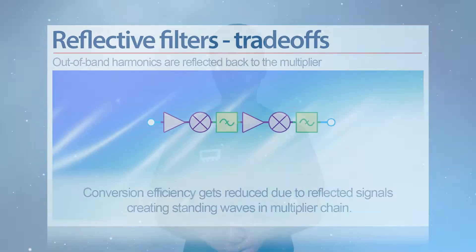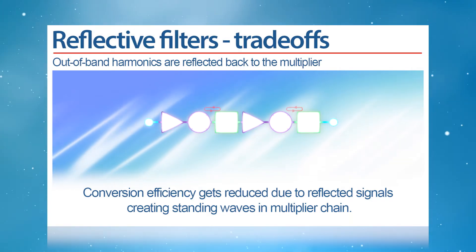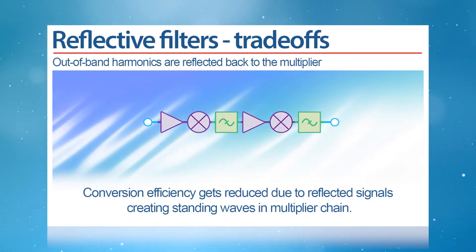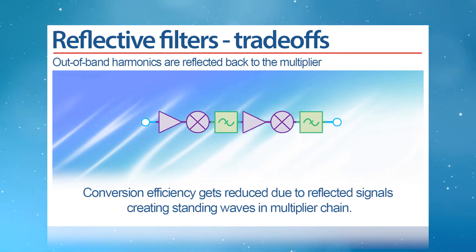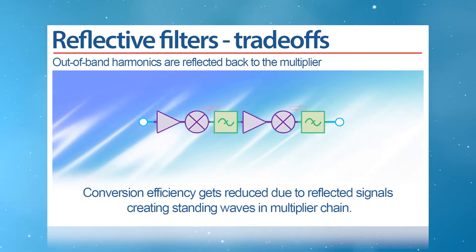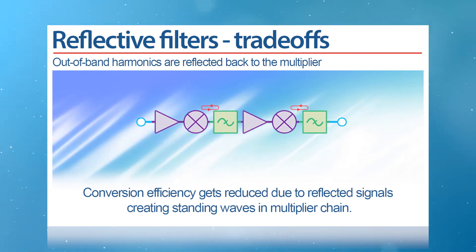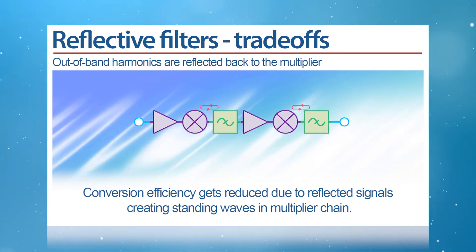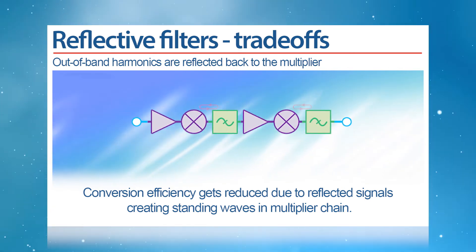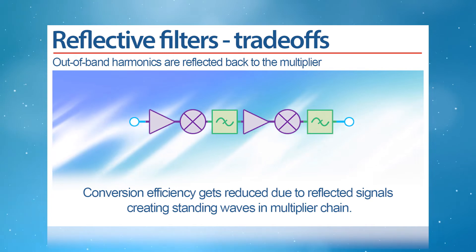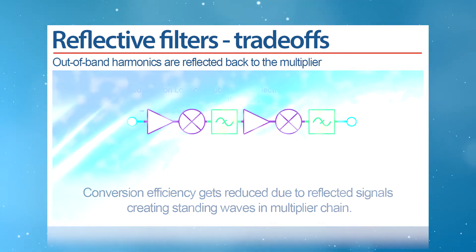One such example, which is very common in the real world, is a multiplier chain. In this specific case, the goal is to stabilize conversion efficiency over frequency. It was observed that using reflective filters in multiplier chains causes an undesired effect where out-of-band harmonics are reflected back into the multiplier. This leads to the multiplier showing ripples in conversion loss and makes it susceptible to external factors.